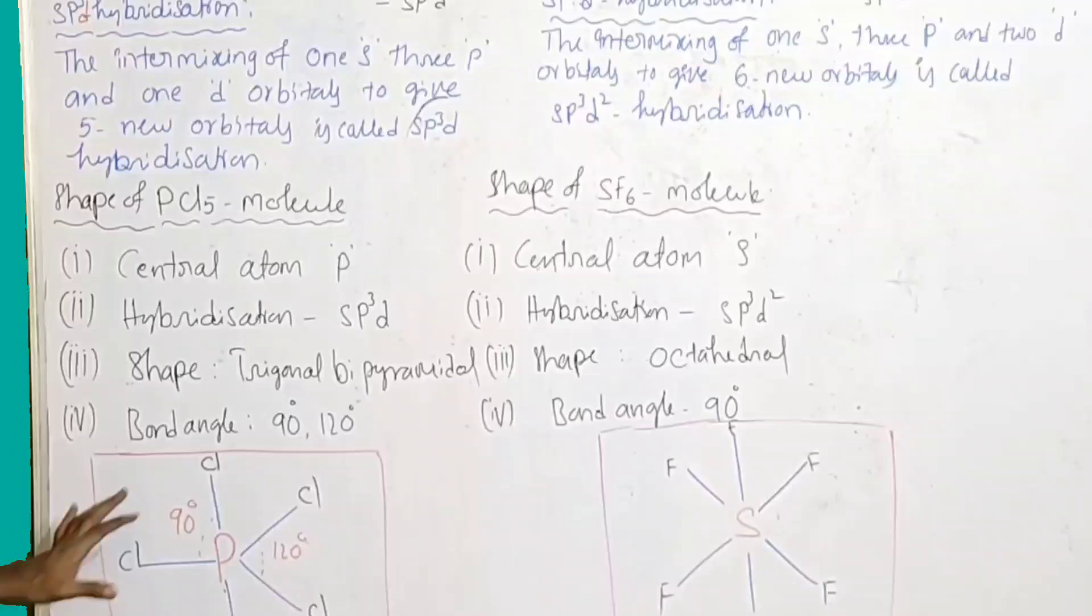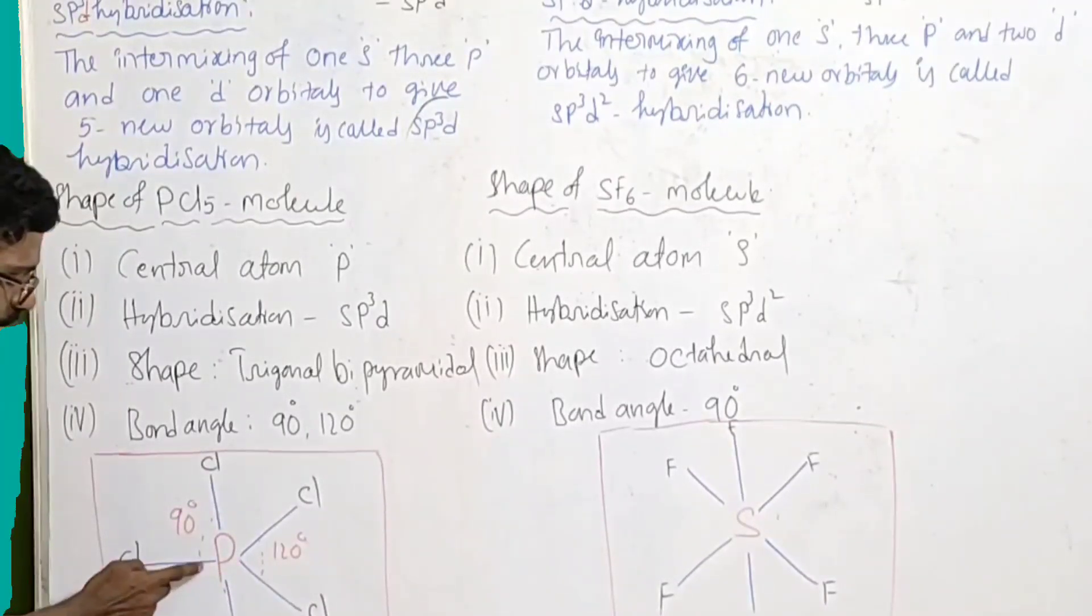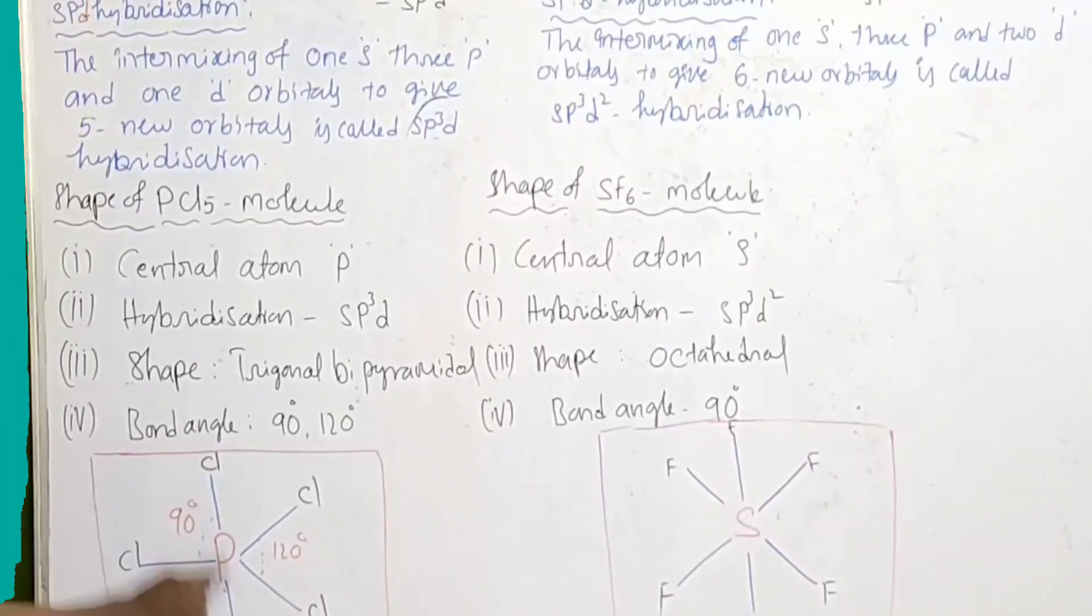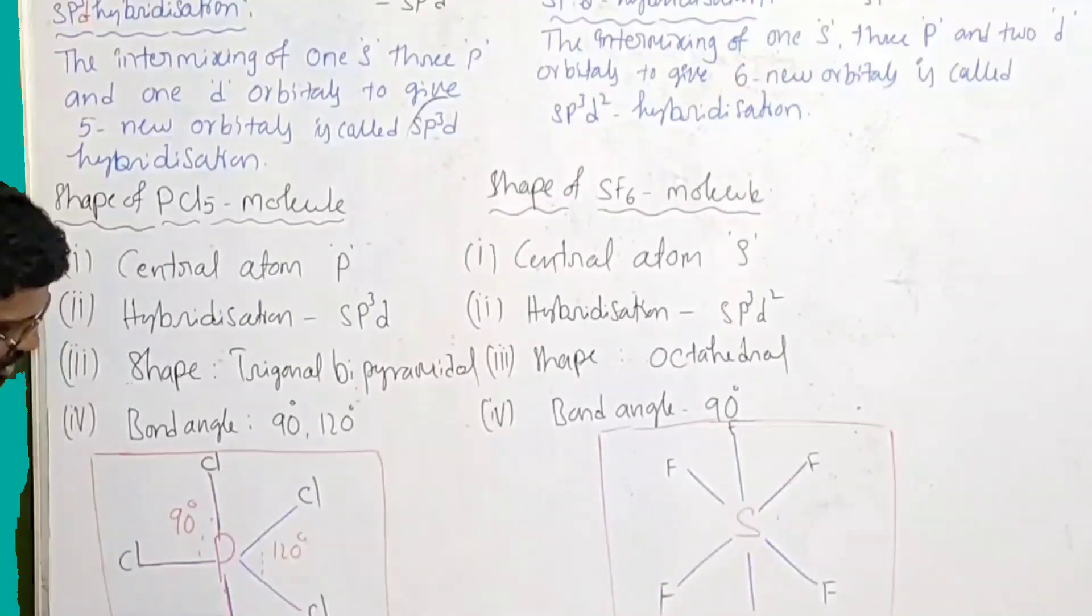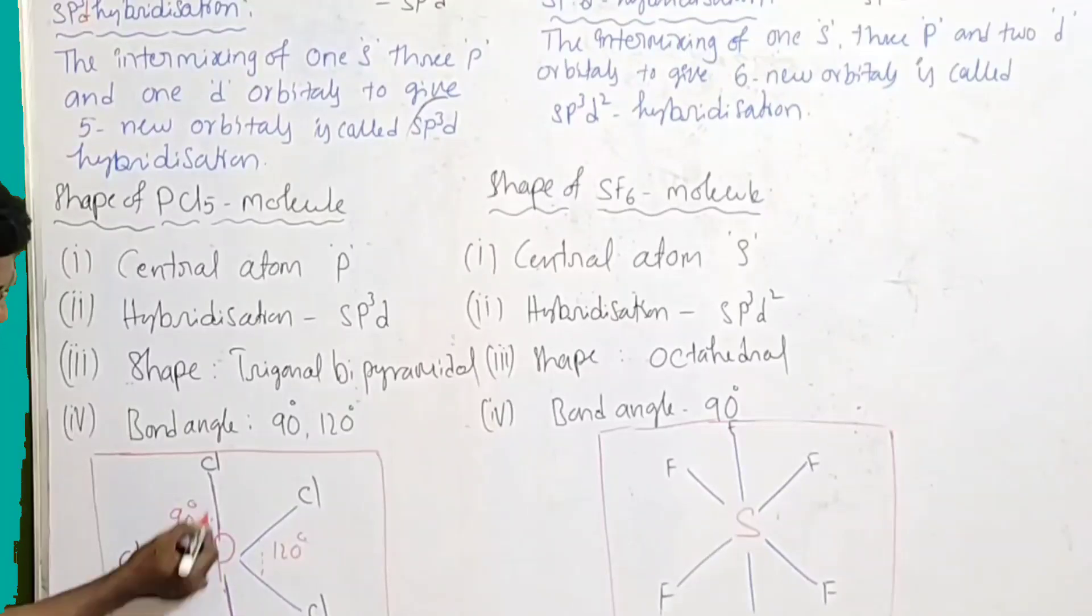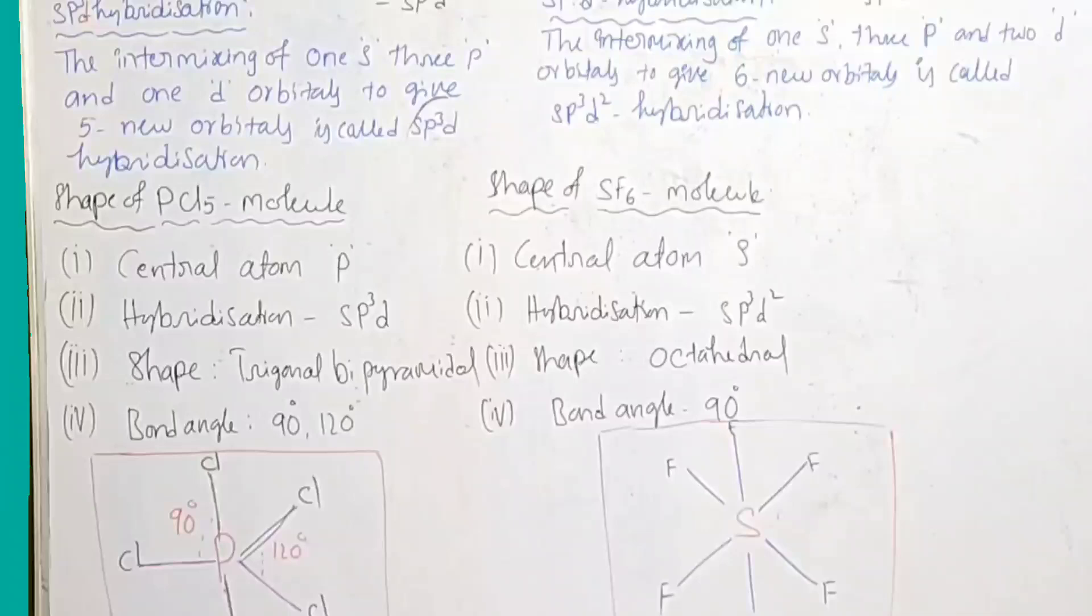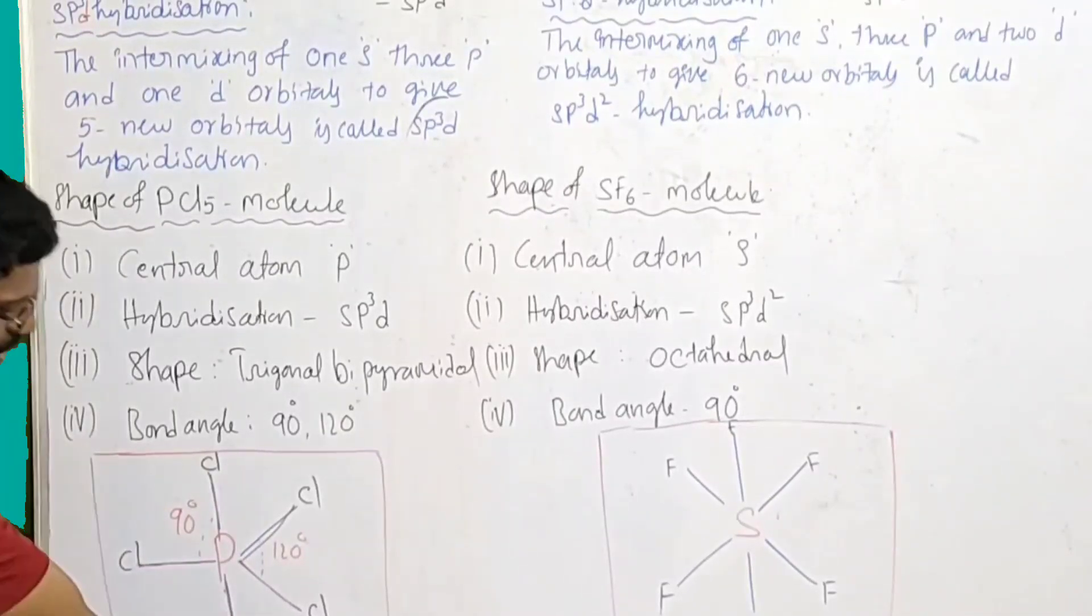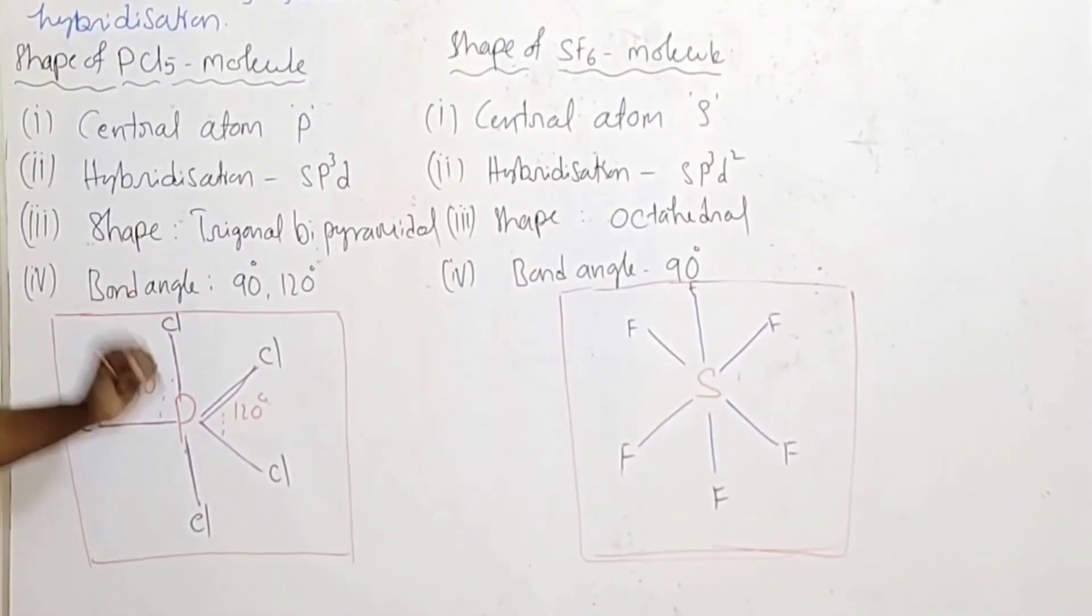After that you have to draw the shape. This shape is drawn with phosphorus in the middle and this is a triangle, with a straight line forming a T shape. The structure extends above and below the plane.